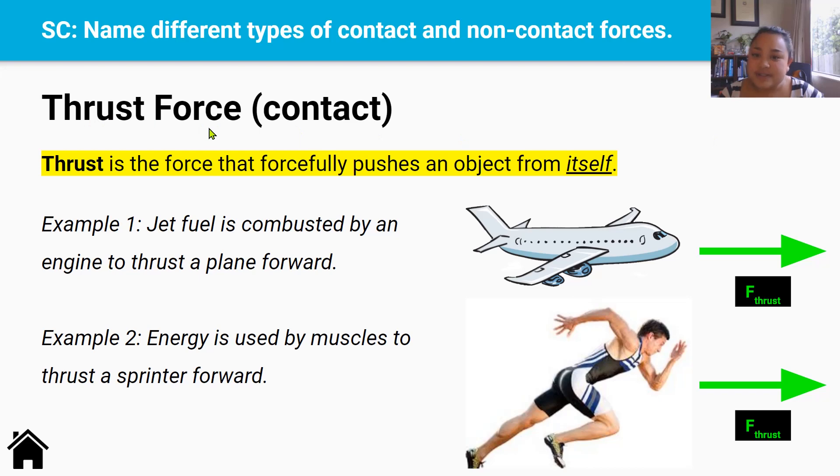So thrust force is an example of a contact force. And it's the force that forcefully pushes an object from itself. So one example is that airplanes use jet fuel, they burn jet fuel, to thrust themselves forward. Another example is that this sprinter uses energy in its muscles to thrust itself forward.